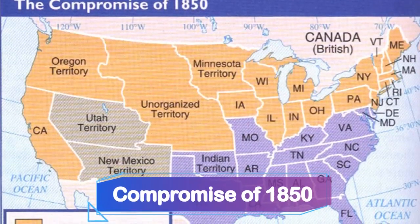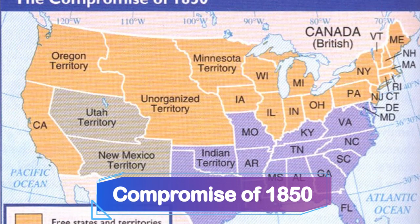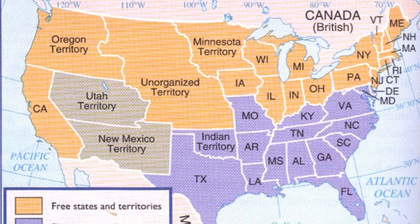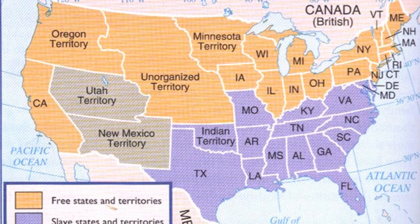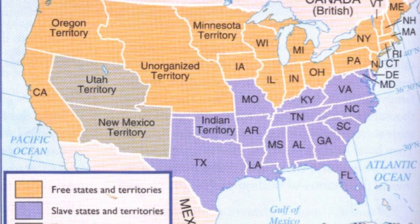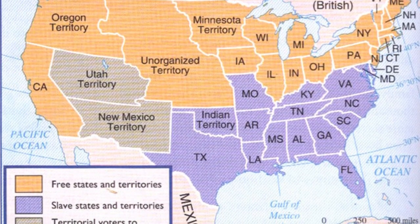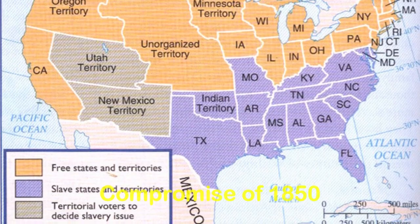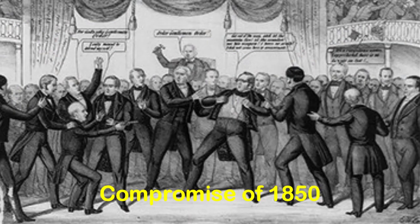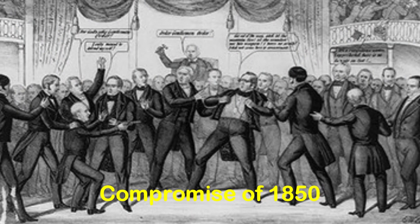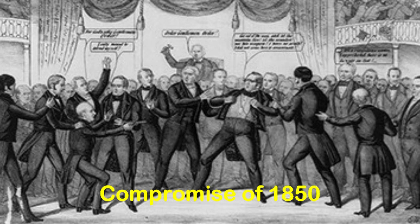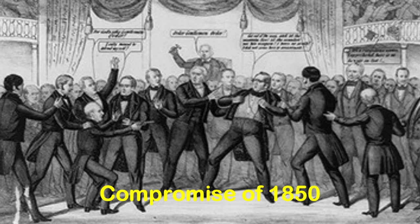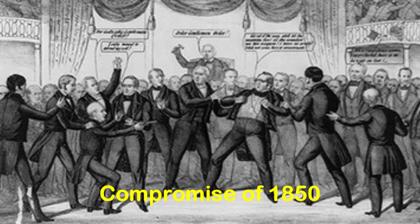As the decade began, the Compromise of 1850 set the stage in the United States. It was a series of legislative measures aimed at addressing the growing tensions between the northern and southern states over the issue of slavery. The Compromise, crafted by Henry Clay, was a delicate balance between the interests of the North and the South.